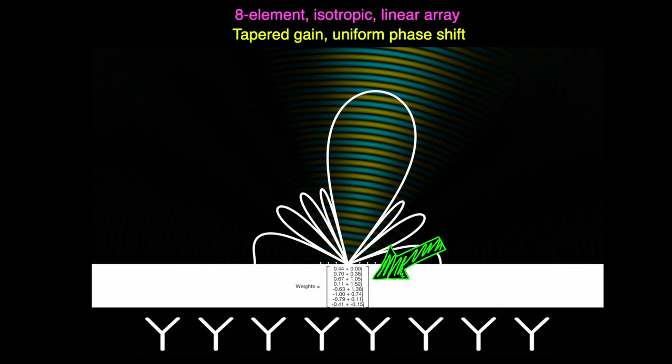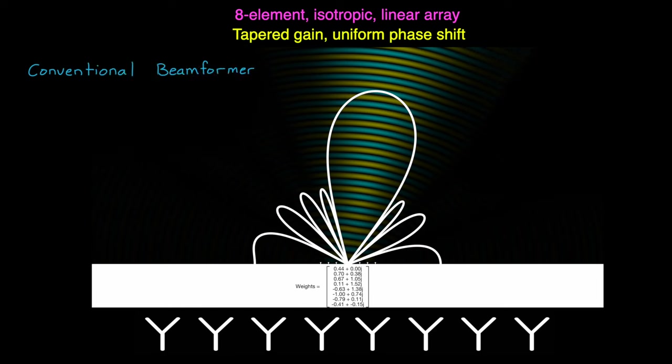Alright, cool. So we have this ability to form a beam through these weights. But the question is, how do we choose them? Well, with a conventional beamformer, it's usually set up with a gain taper to control the side lobes. And then the phase is shifted to steer the beam, exactly what I'm showing here.